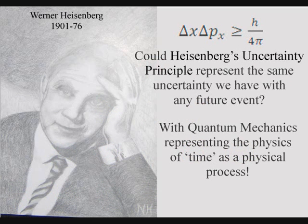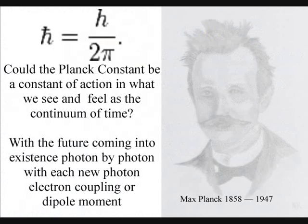In this theory, this represents the same uncertainty we have with any future event, with the Planck constant being a constant of action at the smallest level of the process that forms the continuum of time.